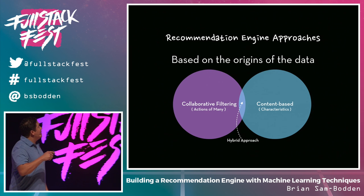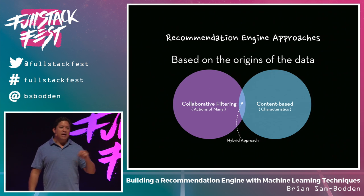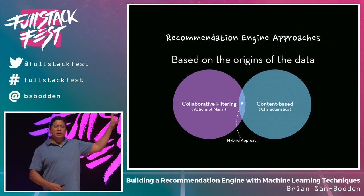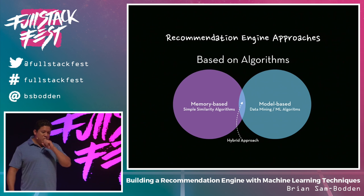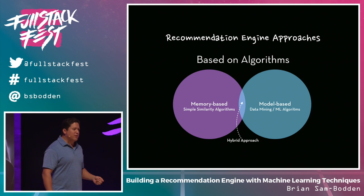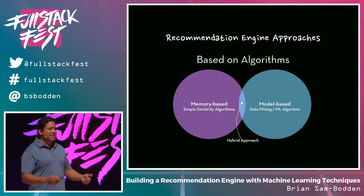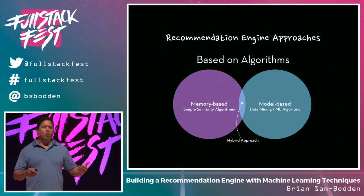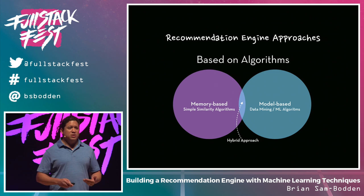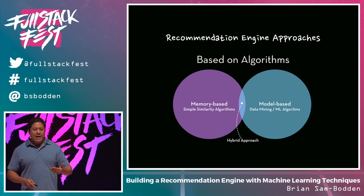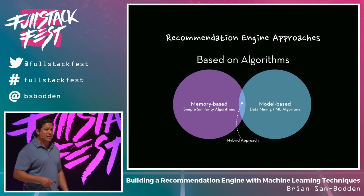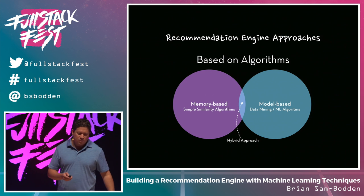The sweet spot nowadays is a hybrid environment where you concentrate on mixing all the data you get from users with the content of the actual items. There's also another way to classify recommendation engines based on the algorithms they use: memory-based systems that work on statistics and computations across the whole matrix of users and items, and model-based systems where machine learning and data mining come into play. Mixing those two is the hybrid approach that seems to work best.